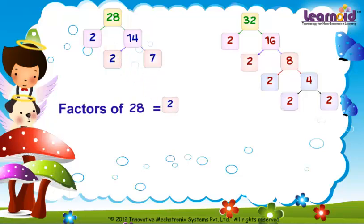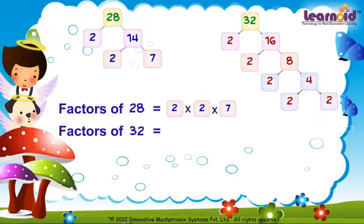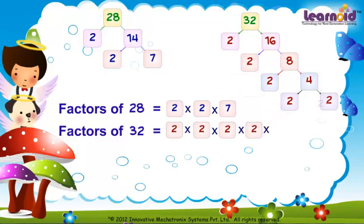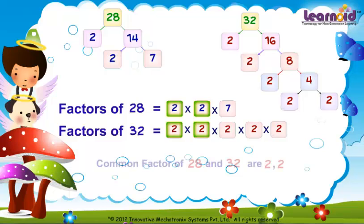Factors of 28 are 2 into 2 into 7. Factors of 32 are 2 into 2 into 2 into 2 into 2. Common factors of 28 and 32 are 2 and 2.